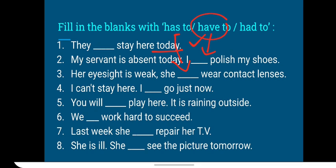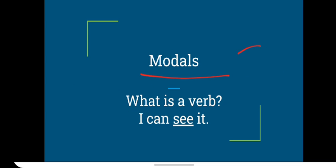You will have to play here. After the word will, we do not change the main verb. We have to work hard to succeed. Last week she had to repair her TV because it is last week, we use past tense. She is ill, she has to see the picture tomorrow. So in this way, you know how we have to use has to, have to, and had to. These phrases can also be used as modal verbs in our normal sentences.